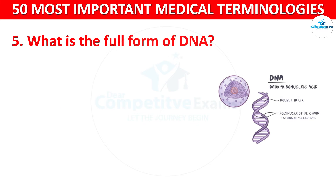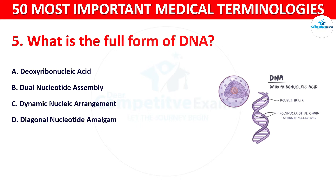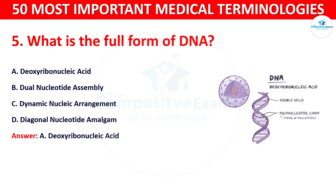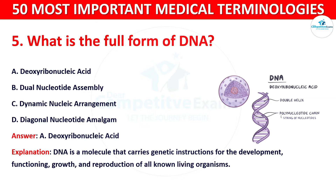Question number 5: What is the full form of DNA? Your options are: A) Deoxyribonucleic Acid, B) Dual Nucleotide Assembly, C) Dynamic Nucleic Arrangement, or D) Diagonal Nucleotide Amalgam. The correct answer is A, Deoxyribonucleic Acid. DNA is a molecule that carries genetic instructions for the development, functioning, growth and reproduction of all known living organisms.